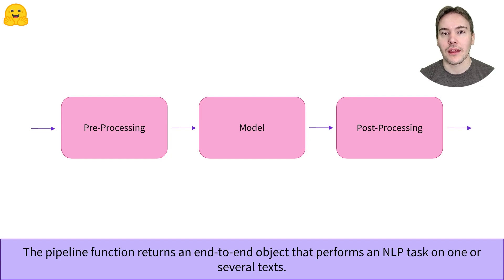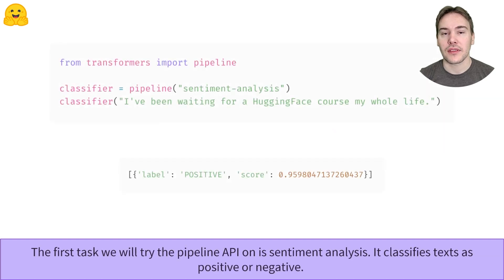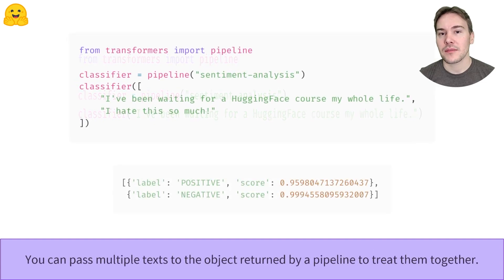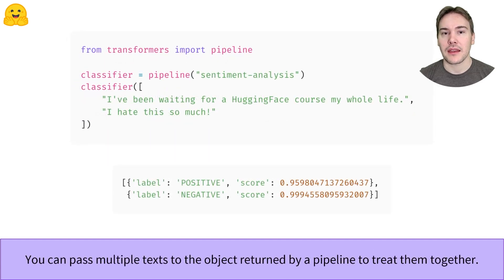Let's look at the first example with the sentiment analysis pipeline. This pipeline performs text classification on a given input and determines if it's positive or negative. Here it attributed the positive label on the given text with a confidence of 95 percent. You can pass multiple texts to the same pipeline, which will be processed and passed through the model together as a batch.